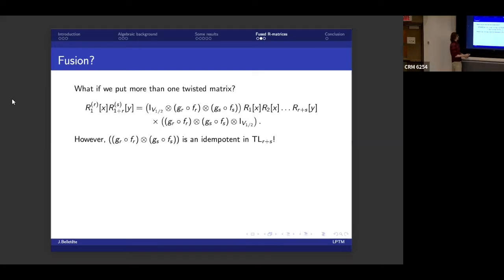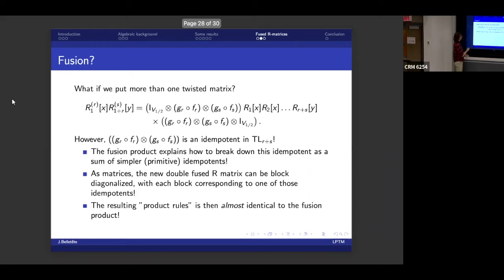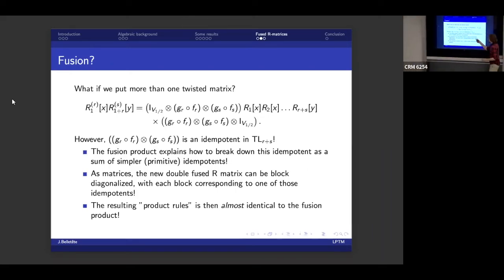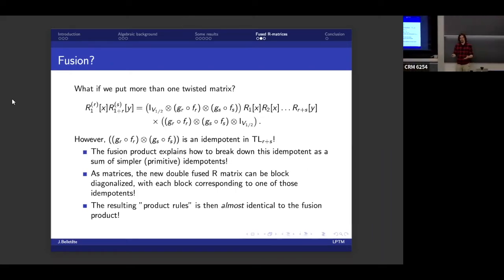However, this tensor product, G_r tensor G_s of the two projectors, it's also an idempotent in Temperley-Lieb. In particular, it's a tensor product of two idempotents. And as I told you, breaking down these tensor products of idempotents, that's what the fusion product does. So the fusion product, it explains how to break down this idempotent as a sum of simpler primitive idempotents.